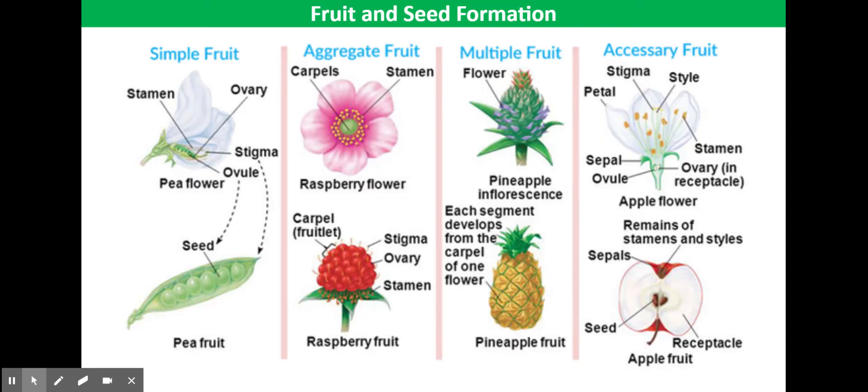After fertilisation, the ovules become seeds and the rest of the carpel, the female part of the plant, becomes the fruit.